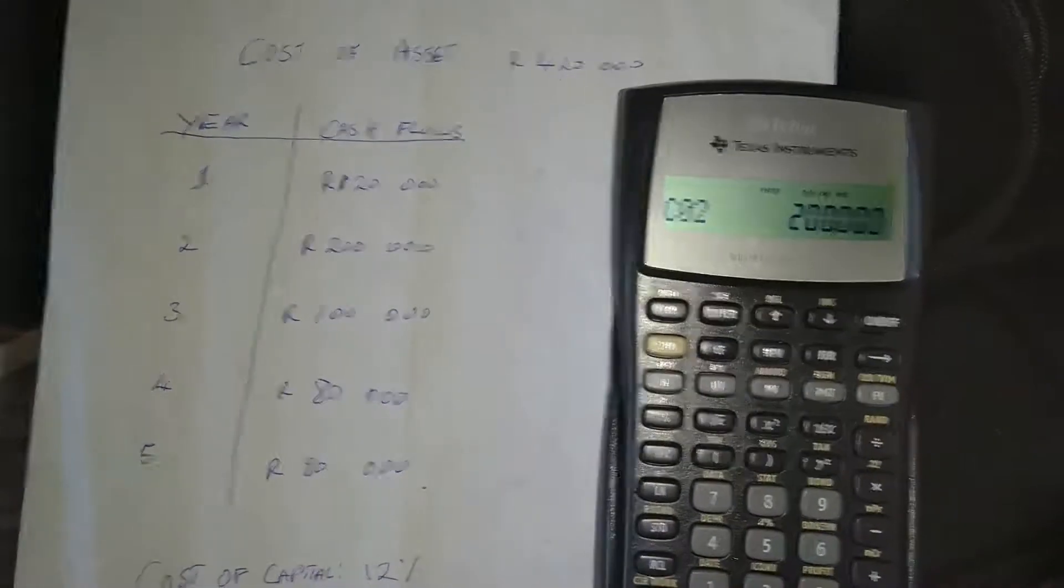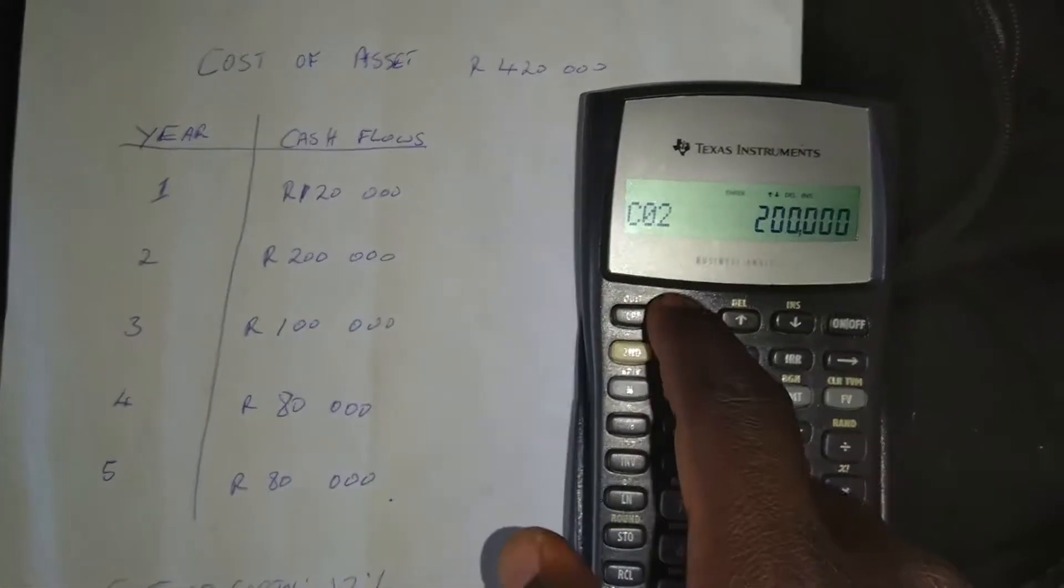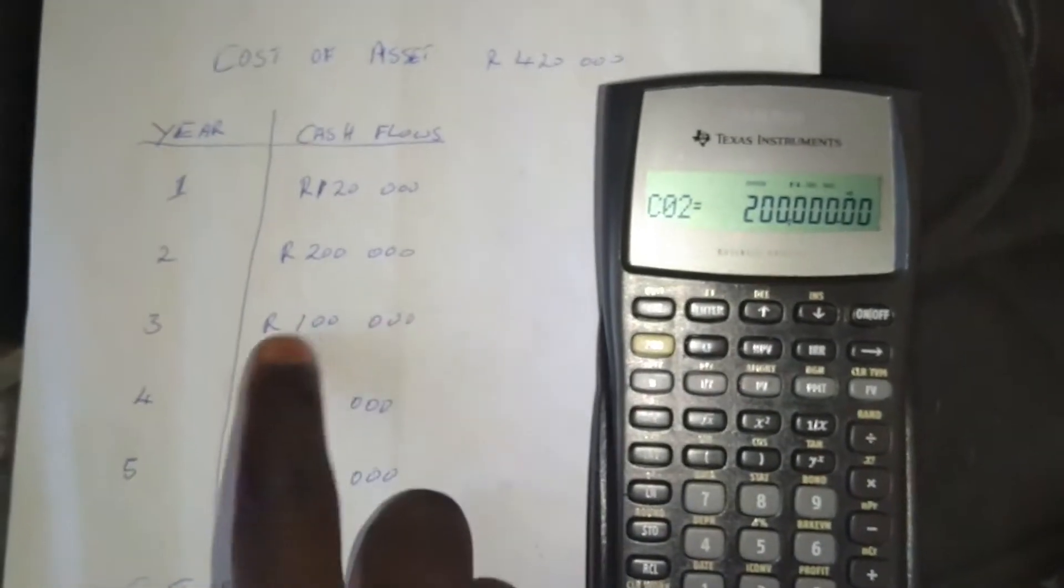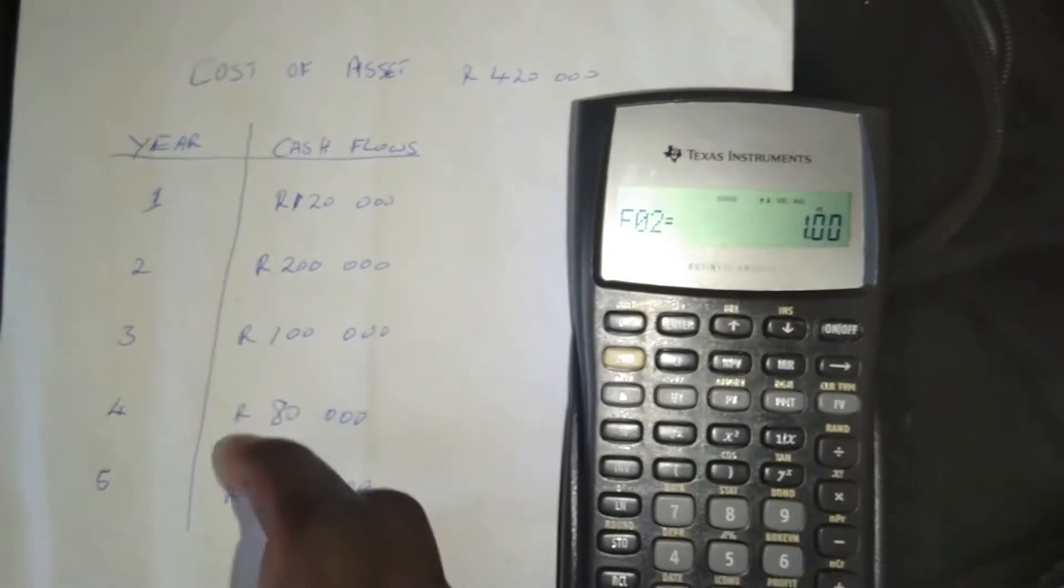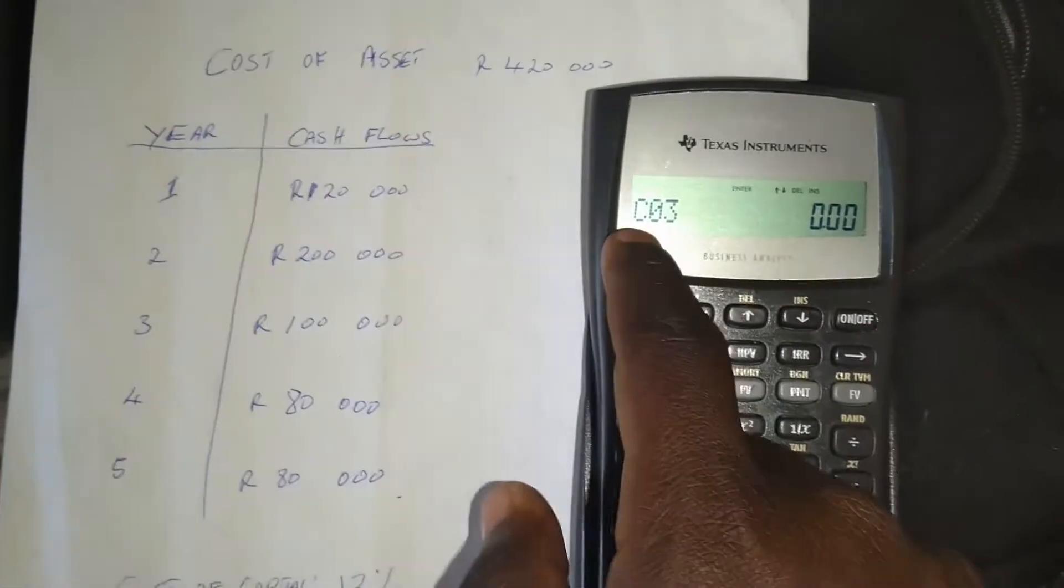It's 200,000 rand. So we press enter. And then cash flow at year three. So we press down arrow. Frequency of cash flow. Well, 200,000 doesn't occur in year three. So we skip, go to cash flow at year three.